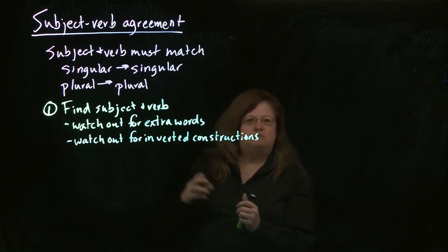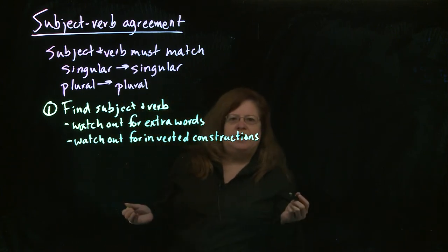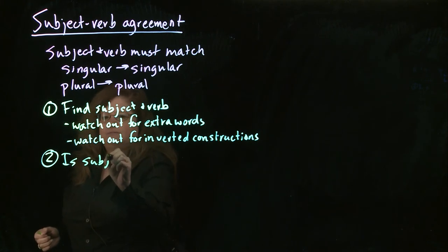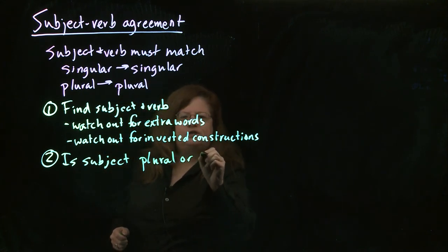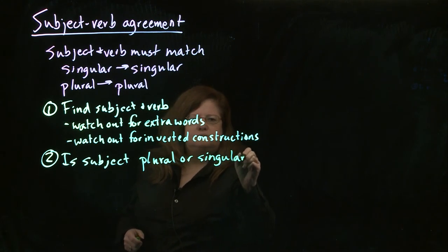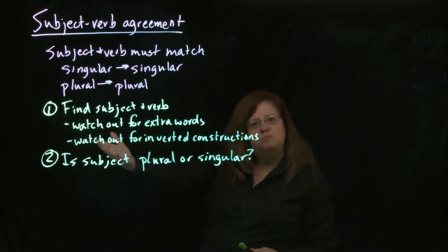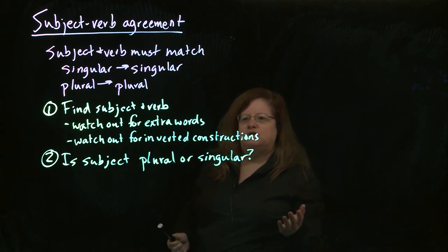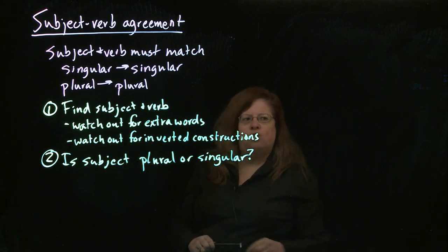But once you've found the subjects and the verbs, or subject and verb if you're dealing with just one sentence, then you're going to ask yourself, is the subject plural or singular? And then depending on whether the subject is plural or singular, then you can make sure the right verb is in place. The verb is going to match the subject in the sentence. So what we now want to do is look at how do you tell whether something is singular or plural.